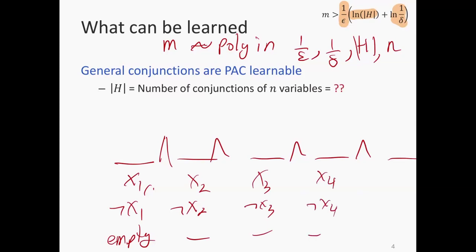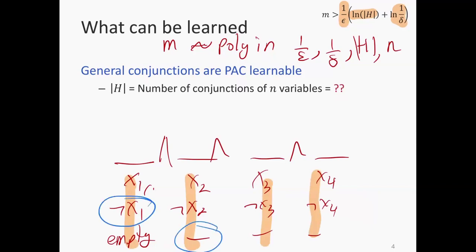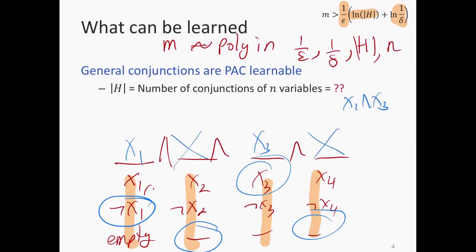Let's say we have only four features. I can choose each column independently. If I choose NOT x1, choose not to put x2, choose x3, and leave x4 empty, I get NOT x1 AND x3. In this procedure, every choice of one of these things gives me a different conjunction, and I can create every possible conjunction this way. I have three choices for each slot, and there are n slots, so I have 3^n possible conjunctions.